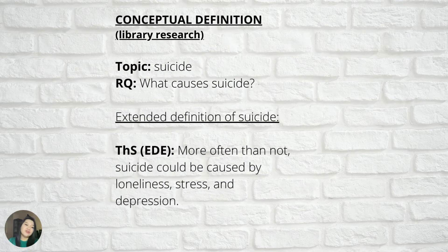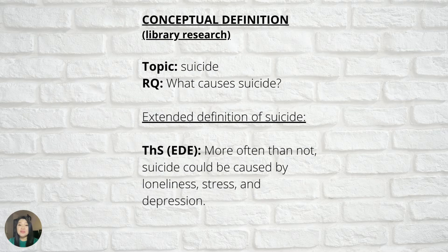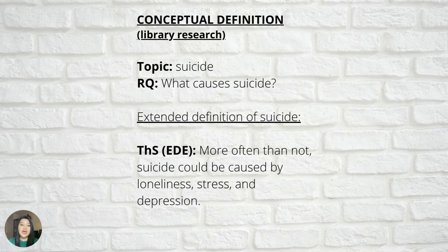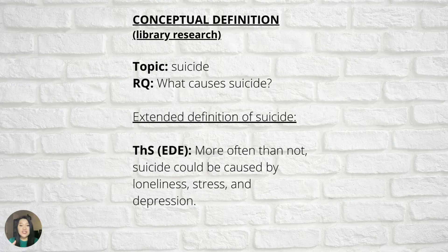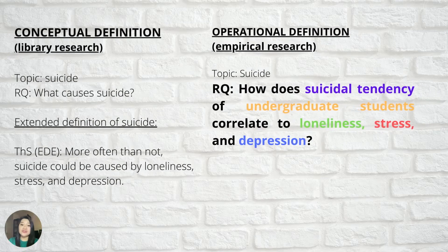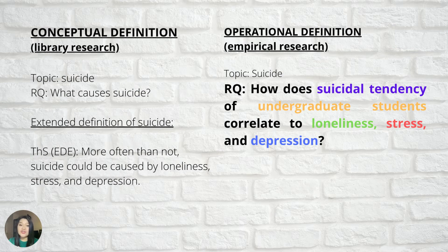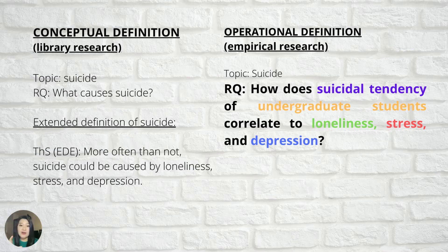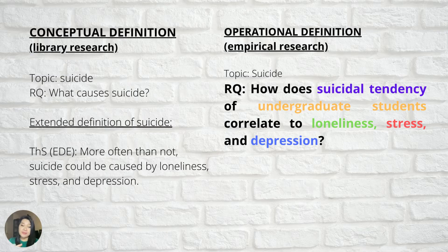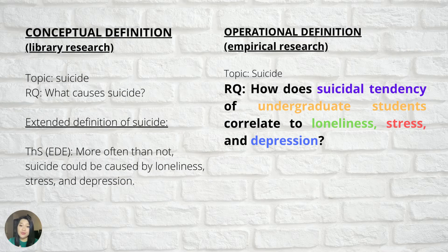Let's have another example. Your topic is suicide and your research question is 'What causes suicide?' To extensively define it, you do library research. To conceptualize your research topic from empirical research papers, you can say that more often than not, suicide could be caused by loneliness, stress, and depression. Then you are ready to operationalize it by adding more variables in your finalized research question — this time investigating suicidal tendencies among undergraduate students, and correlating your dependent variable to independent variables such as loneliness, stress, and depression. So your finalized research question could be: 'How does suicidal tendency of undergraduate students correlate to loneliness, stress, and depression?'